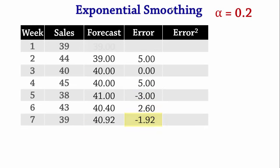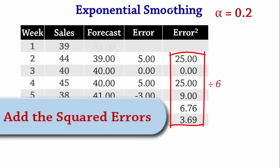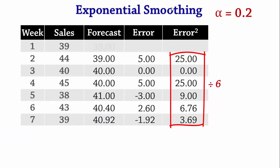Next we square the errors. Starting at Week 2: 5² = 25, 0² = 0, 5² = 25, (−3)² = 9, 2.6² = 6.76, and (−1.92)² = 3.69. Since we only have 6 periods with errors, we add up these squared errors and divide by 6 to obtain a mean squared error of 11.58.